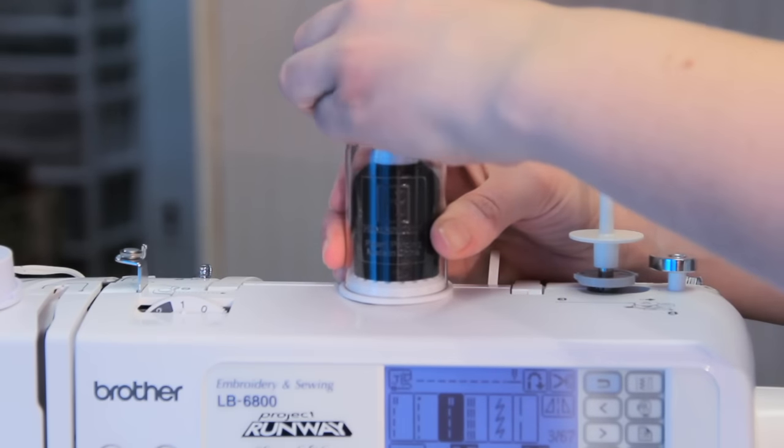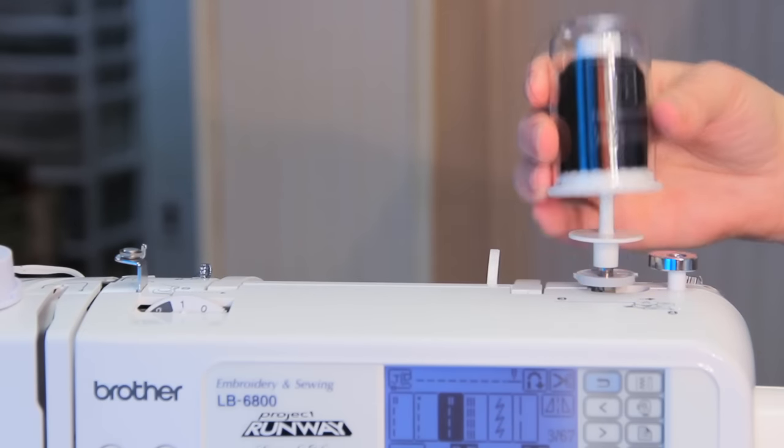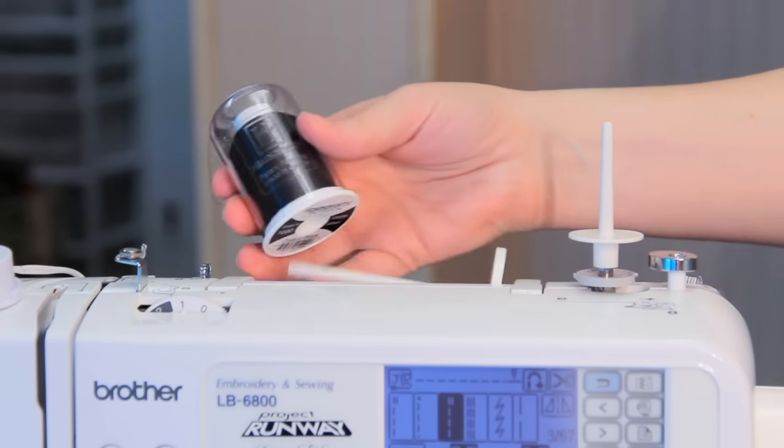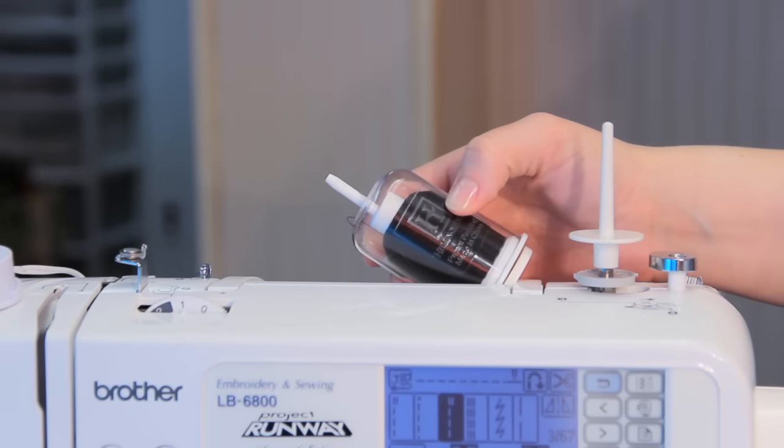You just pull it off to expose the thread. And you can either put the thread on a spool stand or you can put it on your thread holder as you normally would any other thread.